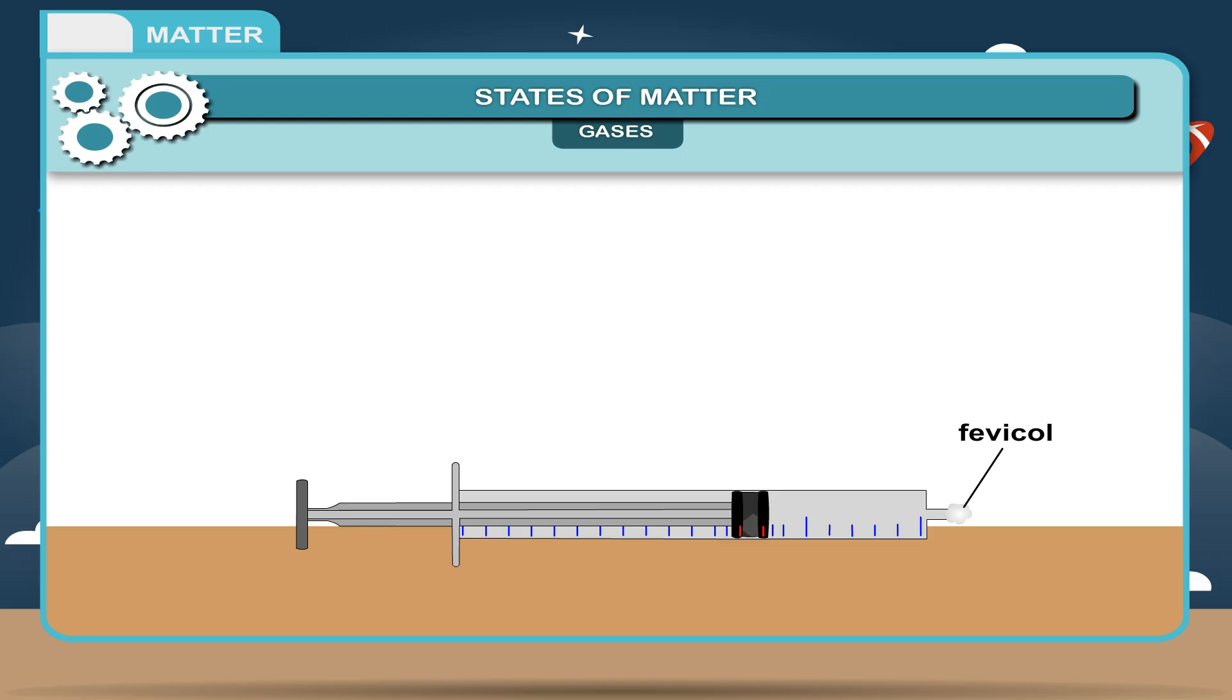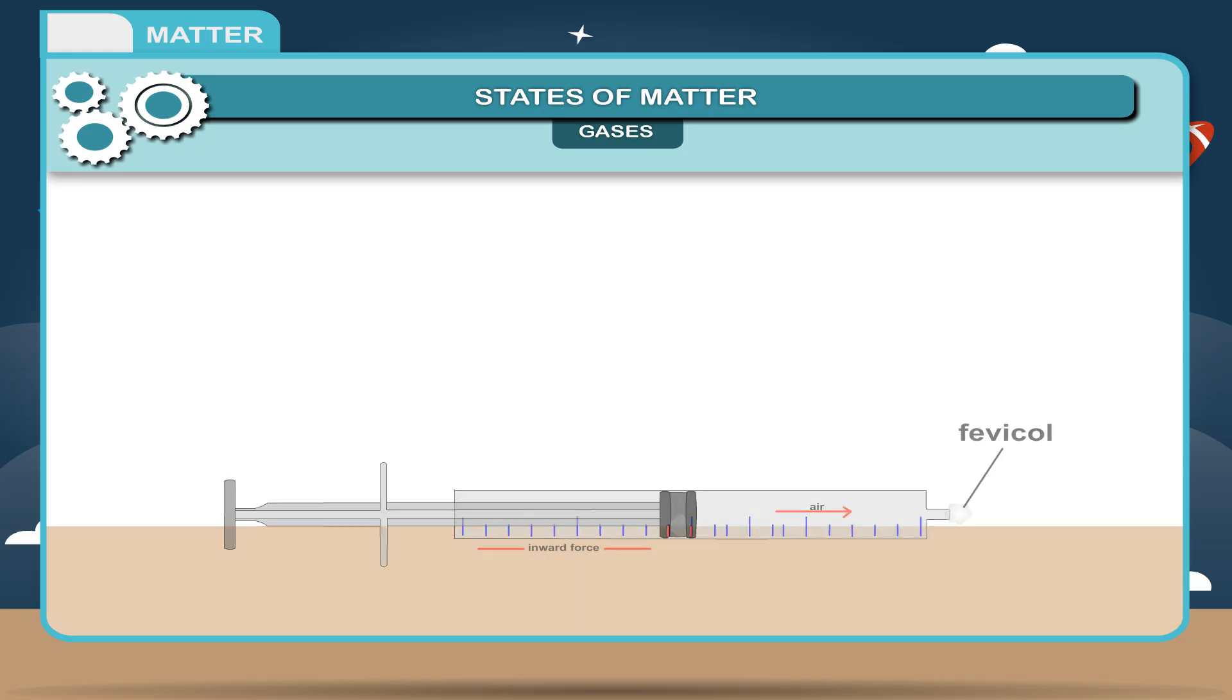Now, take out the plunger from the syringe, and during this process, the syringe gets filled with air. Now, place the plunger in the syringe and push it with an inward force.